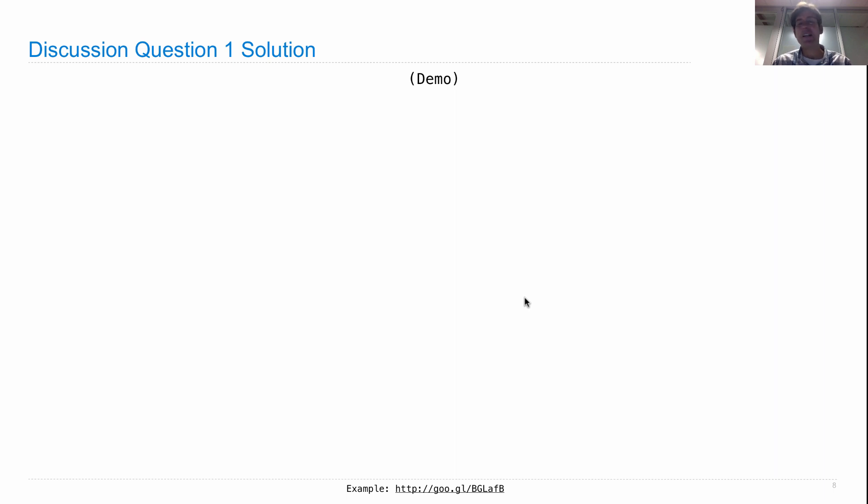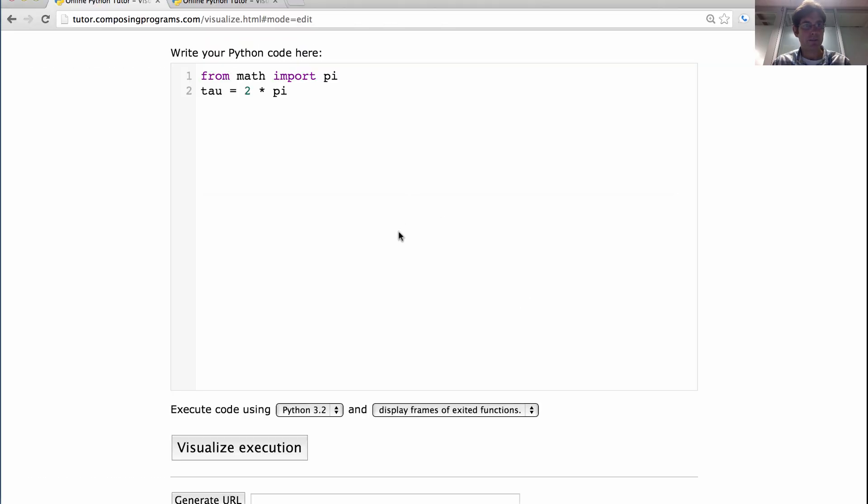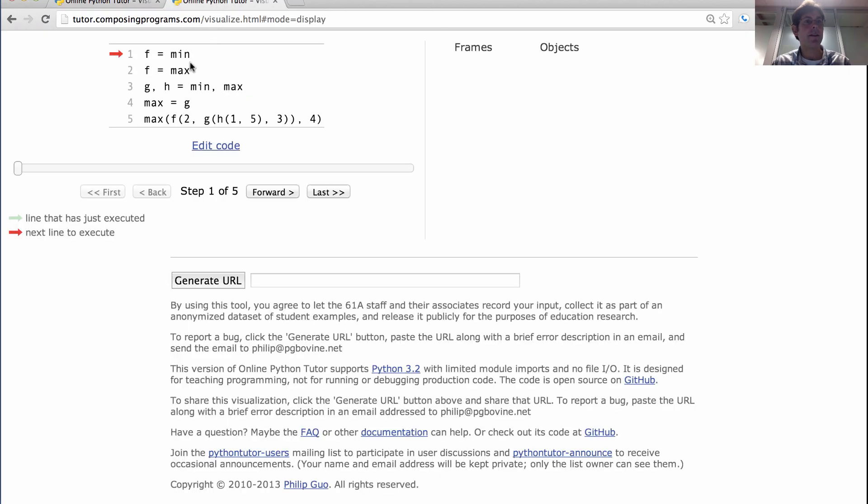Now we can do the complicated case that I asked you to solve by yourselves. Let's just do it live in the Python tutor. So here was the question. What happens if I say f equals min, then f equals max, then gh equals min max, then max equals g, then this large nested call expression? Well, let's watch and see what happens. So the first thing that happens is that f is bound to min. This is the min function, a representation in the environment diagram that's similar to the angled bracket thing that you saw when Python printed it out.